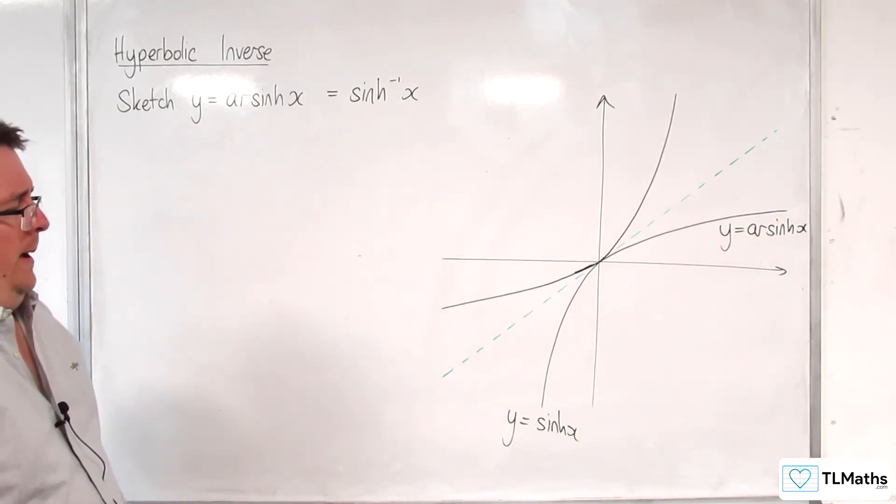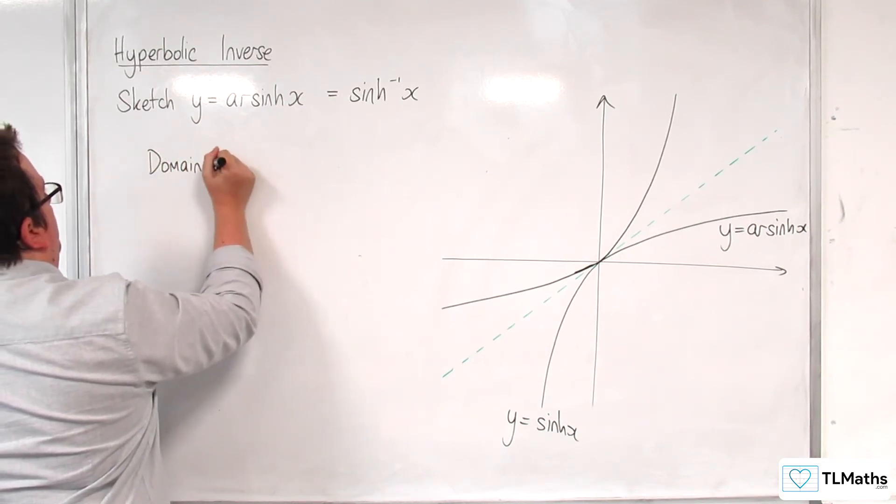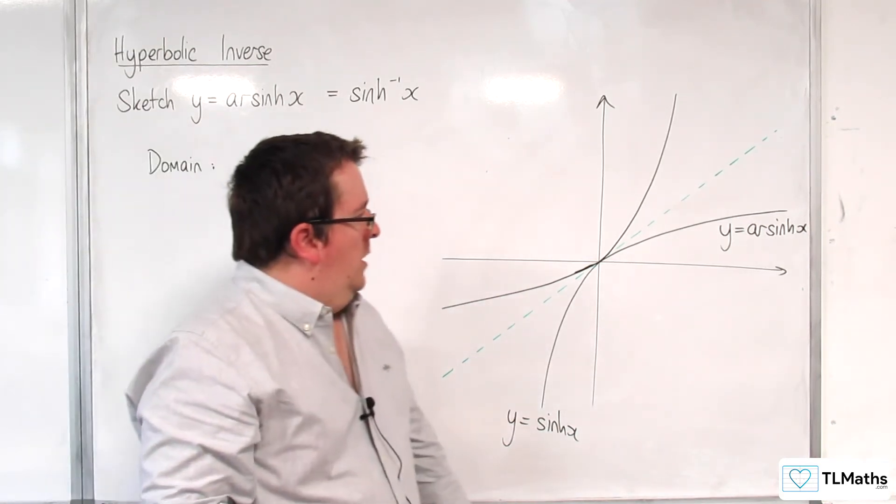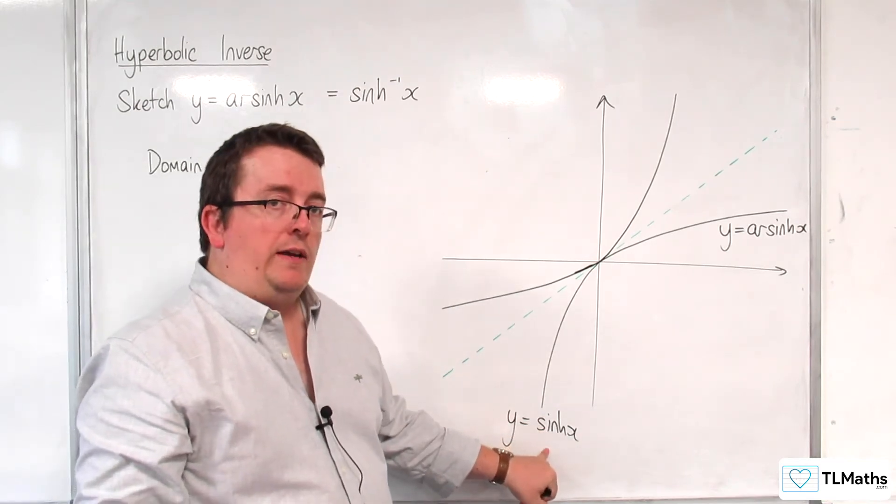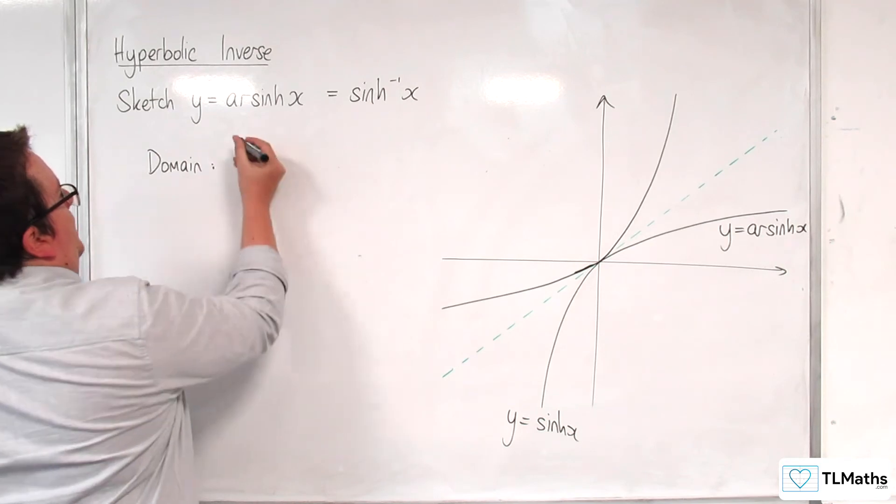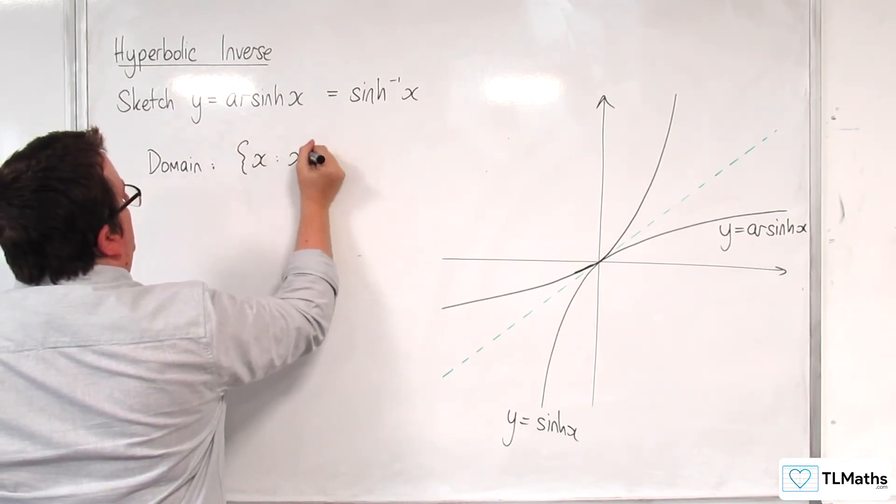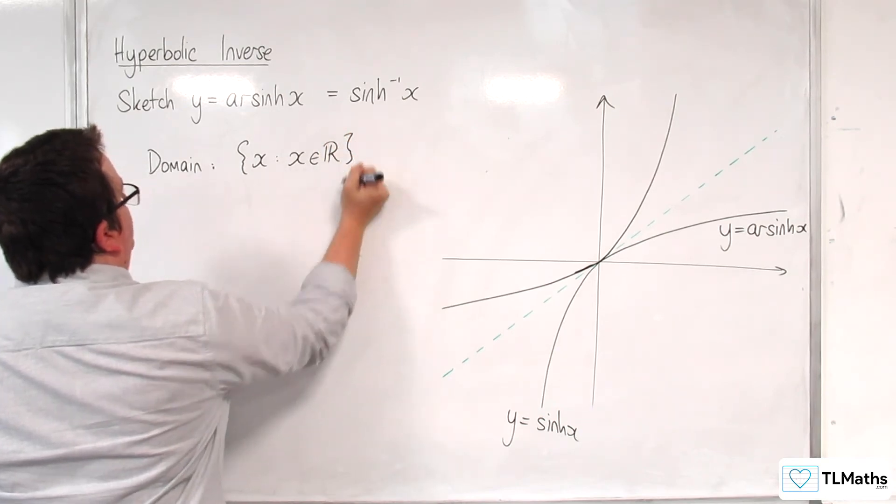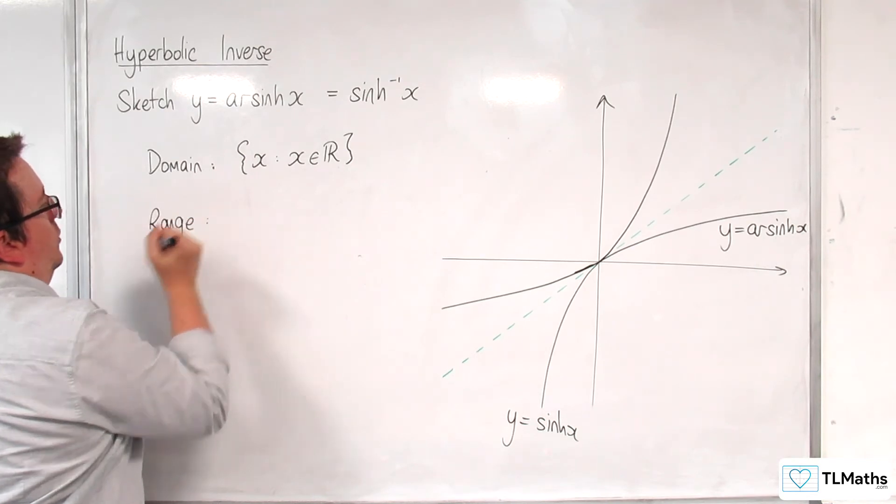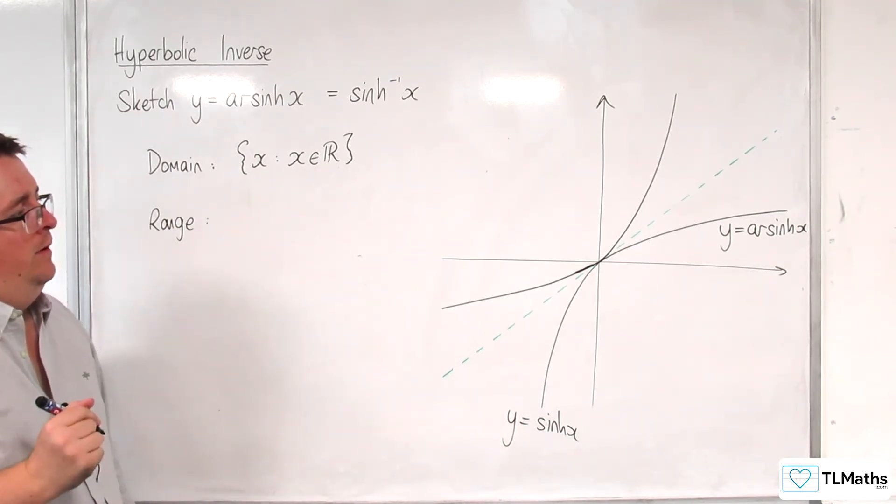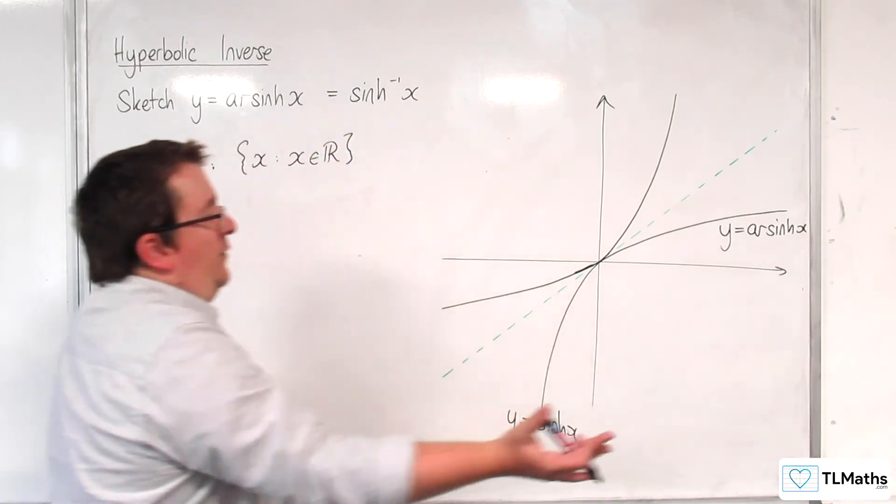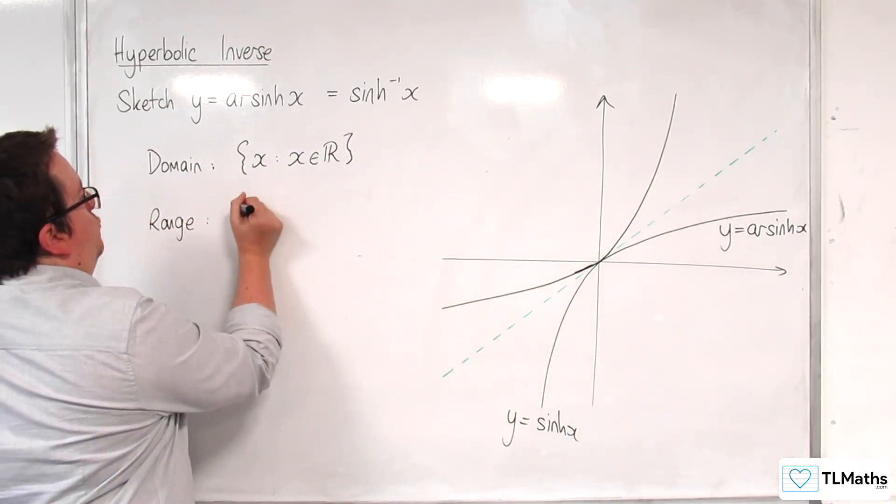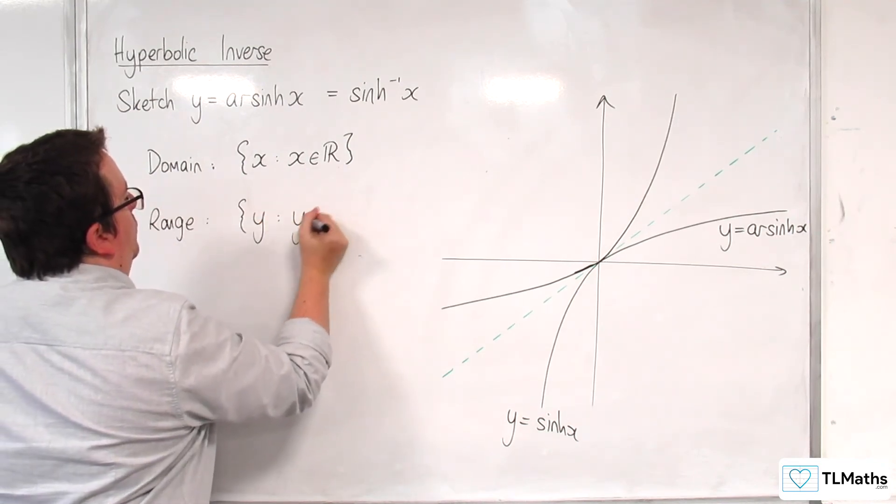Let's think about domain and range then. The domain of arsinh of x should match the range of sinh of x, which is all real values. So that means the domain of the inverse function must be x such that x belongs to the real numbers. And the range of arsinh must be the same as the domain of y equals sinh x. Now, the domain of y equals sinh x was all real values, so that means the range of the inverse function must be all real values.